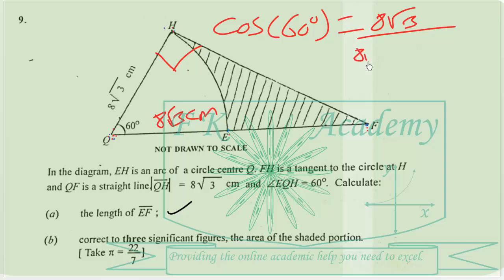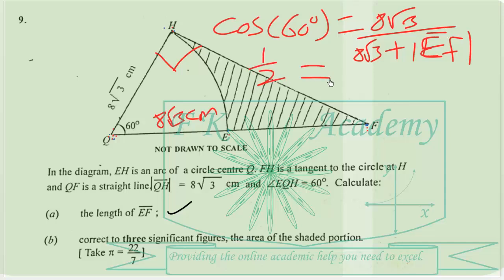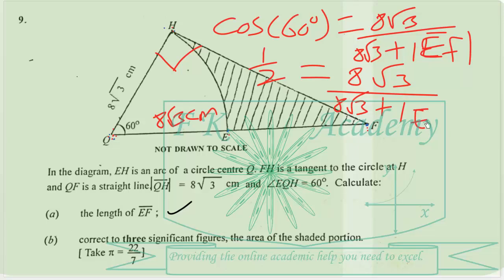So QF equals 8 root 3 plus the length of line segment EF. Therefore, cos 60 equals 1 over 2, and that is equal to 8 root 3 over 8 root 3 plus line segment EF.